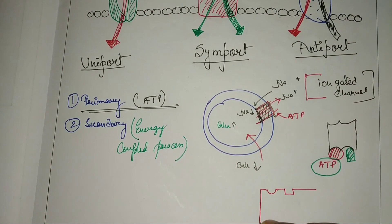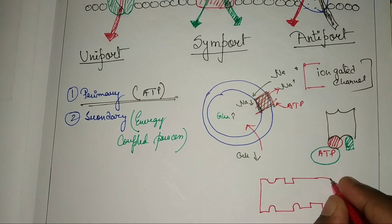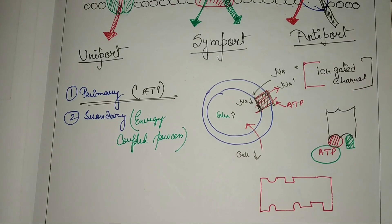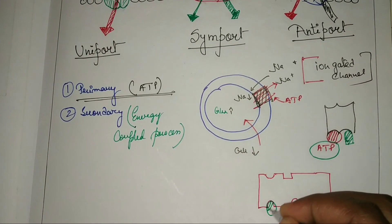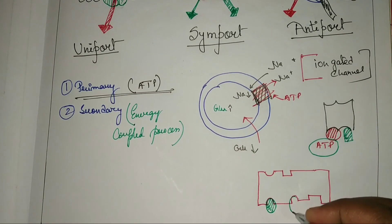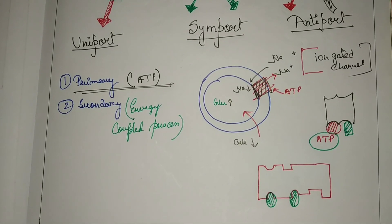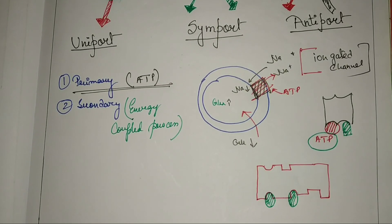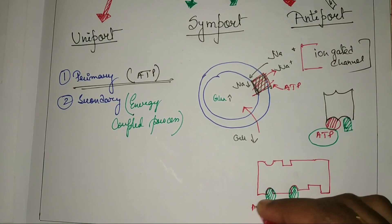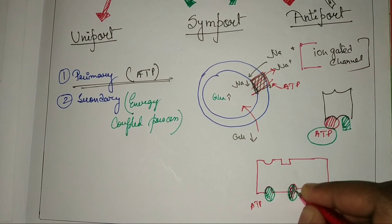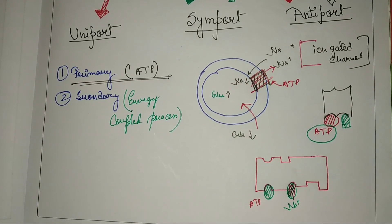The channel for secondary active transport looks like this. It has one ATP binding site and one sodium binding site, because sodium helps glucose to go inside. So the channel has a site for ATP, a site for sodium ion, and a site for glucose.